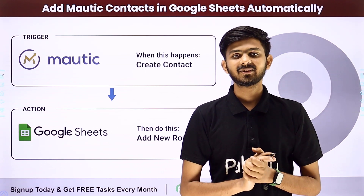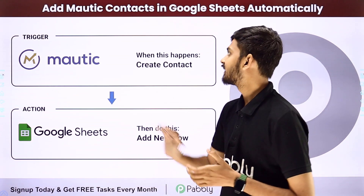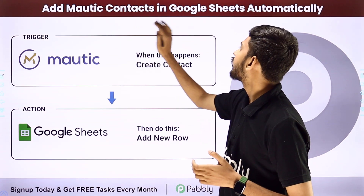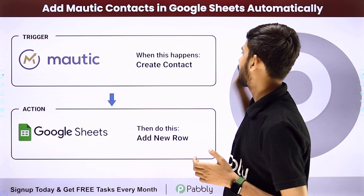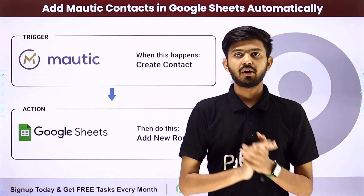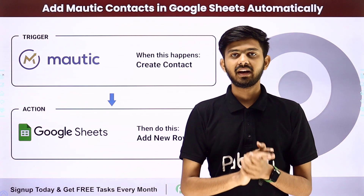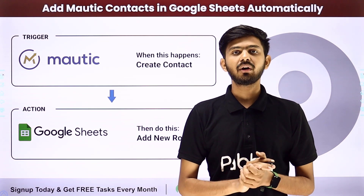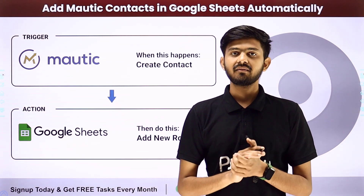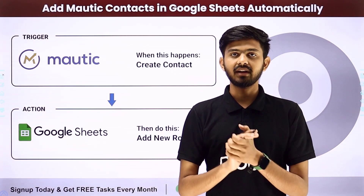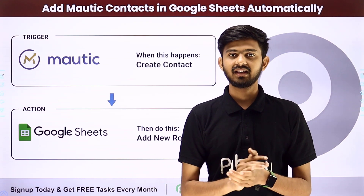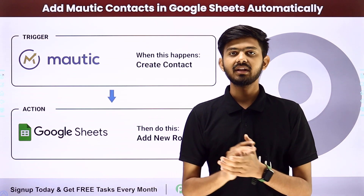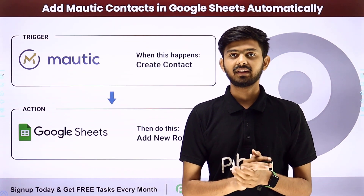Hello everyone. Today our topic is how to add Motech contacts in Google Sheets automatically. Our objective is: whenever we create a new contact in Motech, we want to add a new row in our Google Sheets automatically using those details.